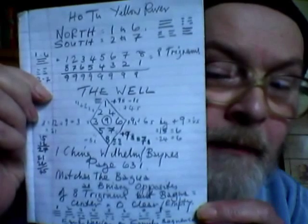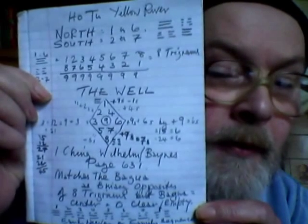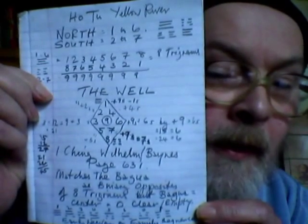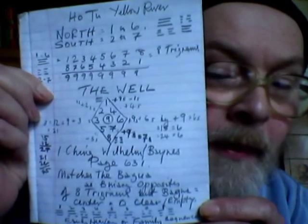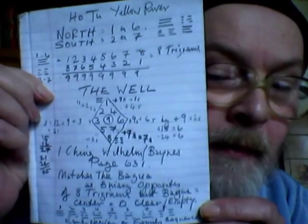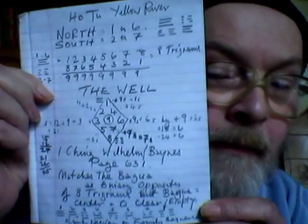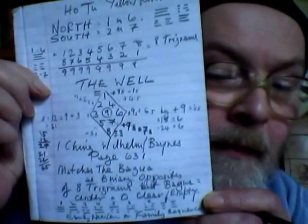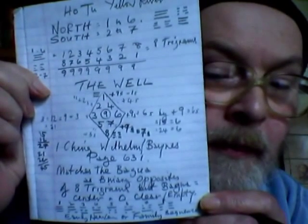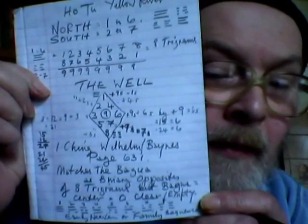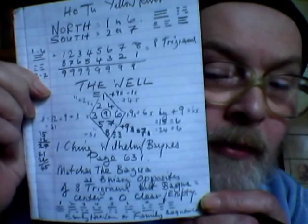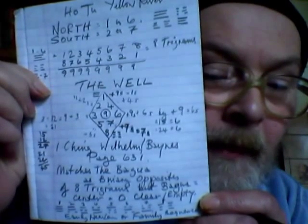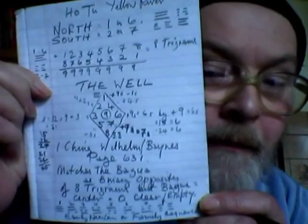The well is in the I Ching Wilhelm Banes edition on page 631. The pattern of the well matches the Bergauer in the family, or the Early Heaven sequence of trigrams. And so the two go together.